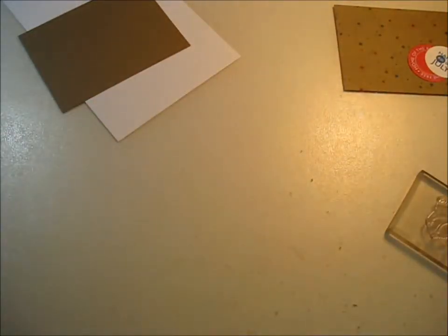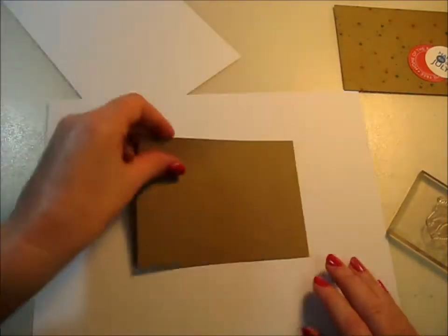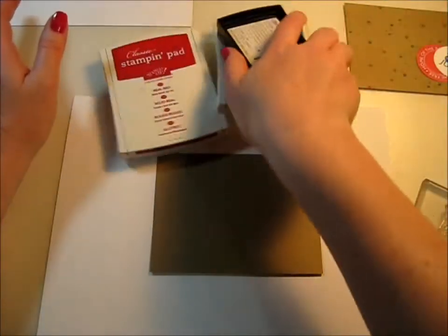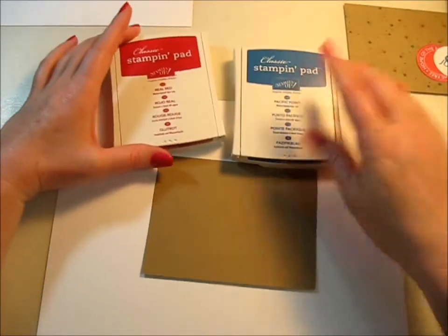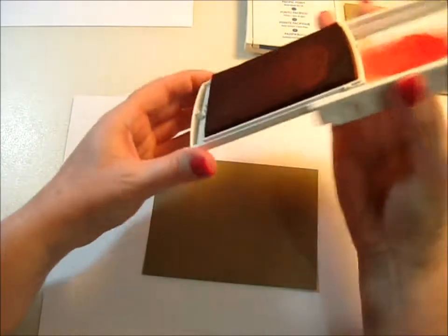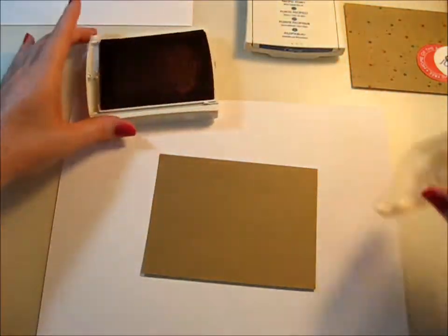First of all, I need a piece of paper to go underneath my card. So on this one, we are going to use Real Red and Pacific Point. You can choose any colors you want. Fireworks come in all different colors. It's totally up to you.